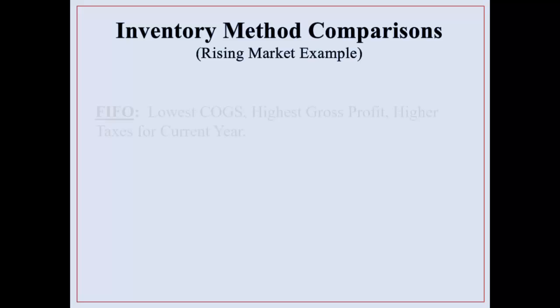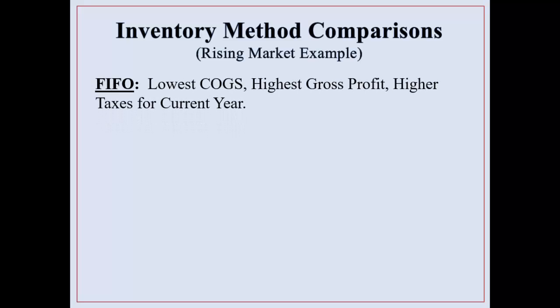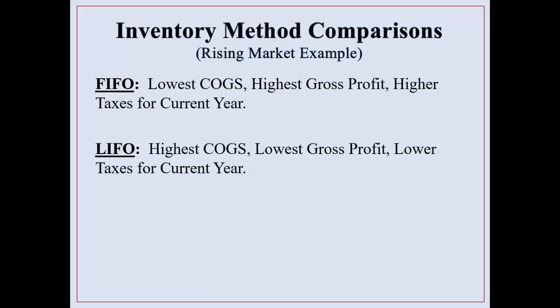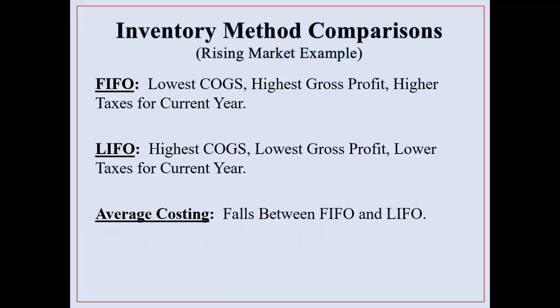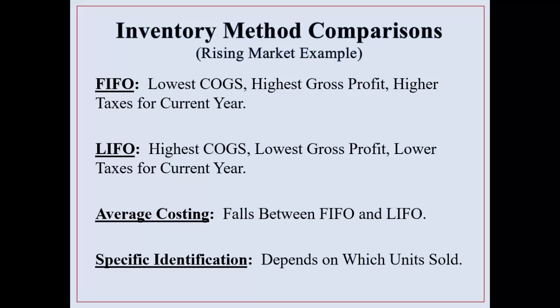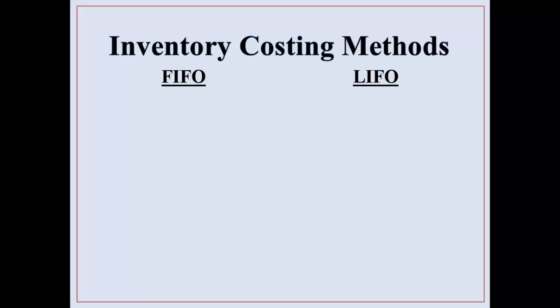For inventory method comparisons in a rising market: FIFO gives you the lowest cost of goods sold, the highest gross profit, and higher taxes for the current year. LIFO will have a higher cost of goods sold in a rising market, lower profit, and lower taxes. Average costing always falls between. Specific ID depends on which units are sold.